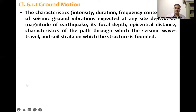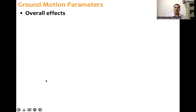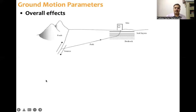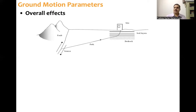Let's look at the overall effects. You can see this is the source, this is the path, and our site is here. At the site there are different soil layers and bedrock. The thickness of the local site and the flexibility or stiffness of the local site also contribute. So let's look at how these parameters affect the ground motion characteristics.